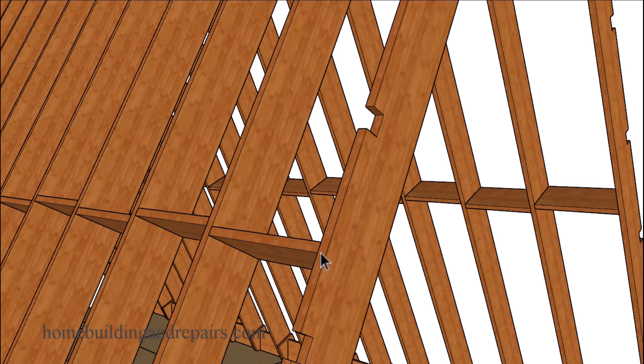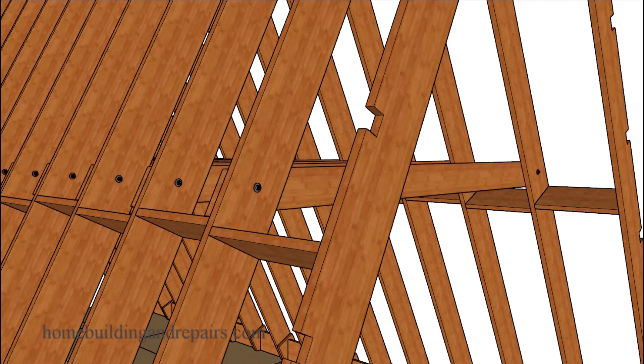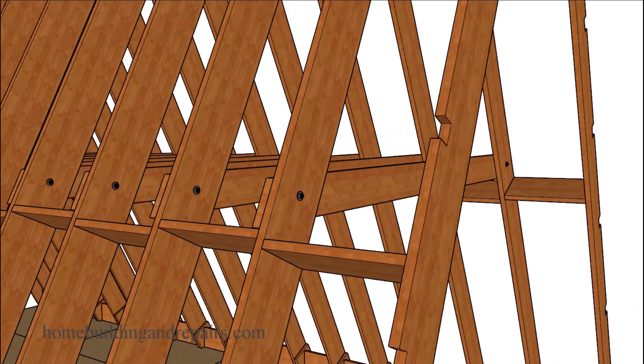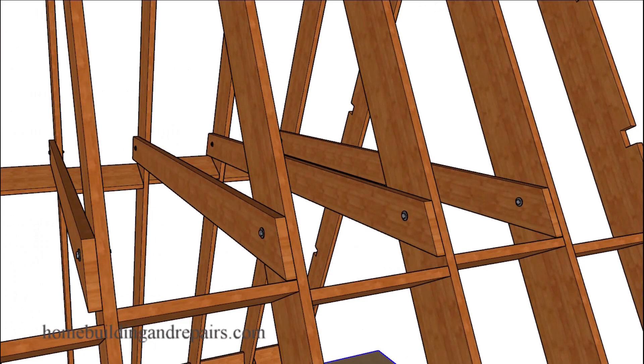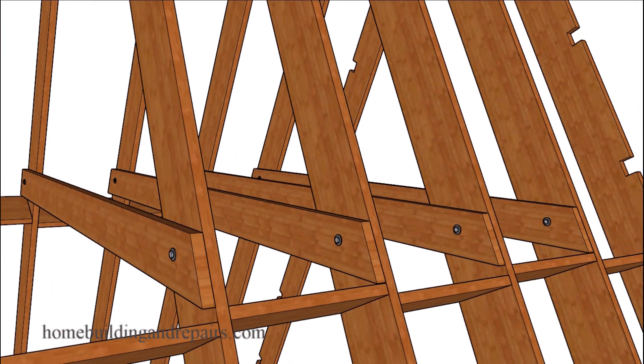I think this building will require mid-span blocks so I put them in along with the collar ties. The collar ties are kind of designed the same as the previous examples I've made so far and will be bolted to the roof rafters.